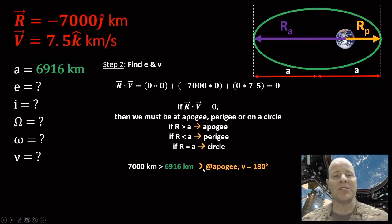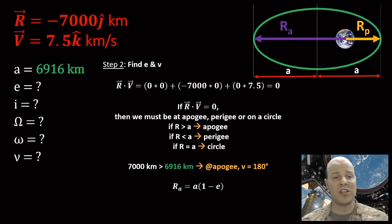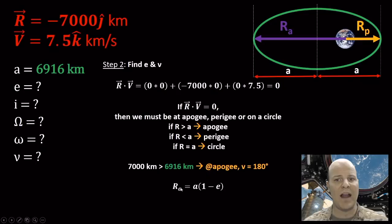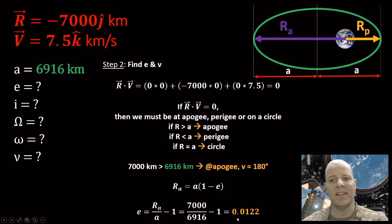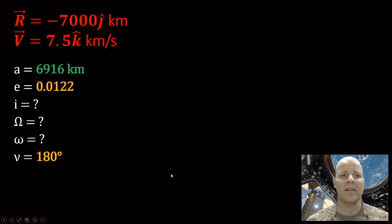If we are at apogee, then our true anomaly must be 180 degrees by definition — that's a bonus! To solve for eccentricity, we use whatever relationship we have with our current position. Since we're at apogee, we use R_A = A(1 + E). Rearranging algebraically, we find E = 0.0122. Three down, three to go.